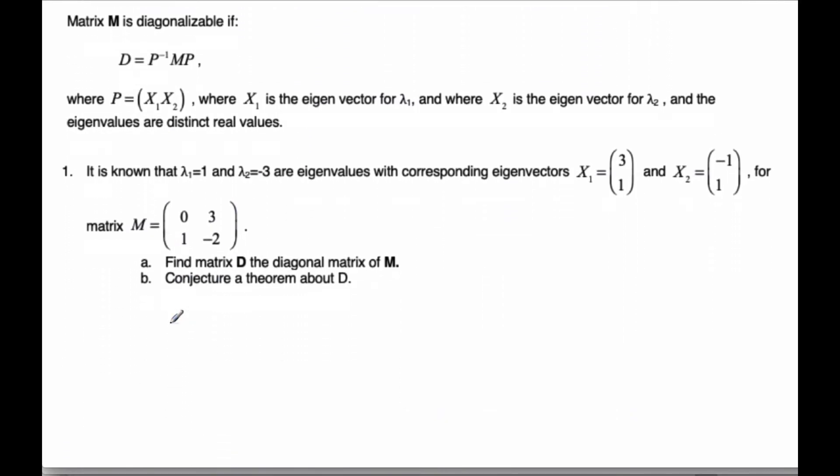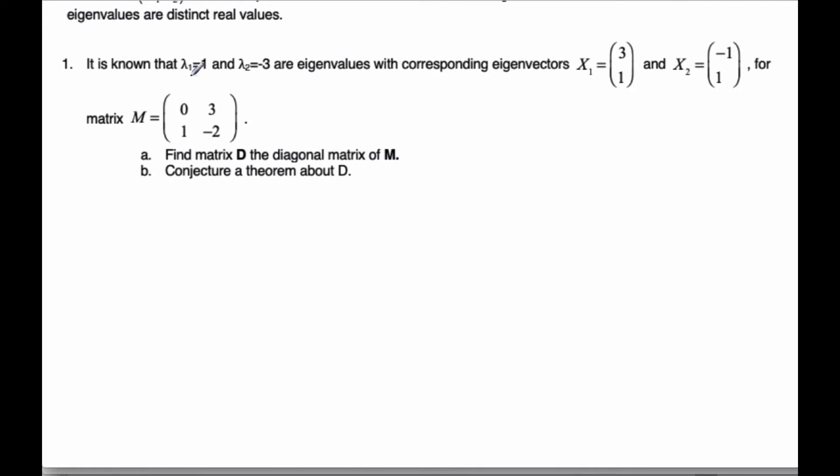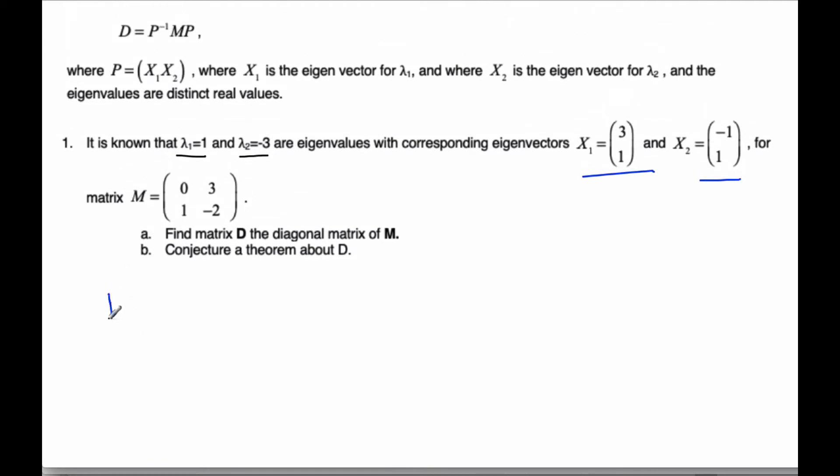So we know that the eigenvalues are 1 and negative 3. And so with those eigenvalues, they also have corresponding eigenvectors of 3, 1, and negative 1, 1 for matrix M. So I want to find D. Well, from our definition above, D is equal to the inverse of P times M times P. So I need to find what P is.